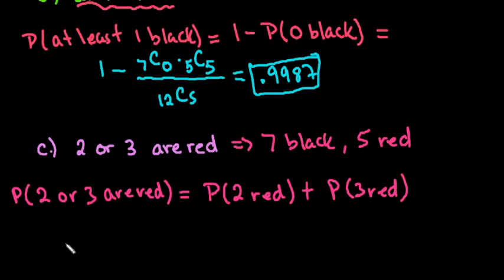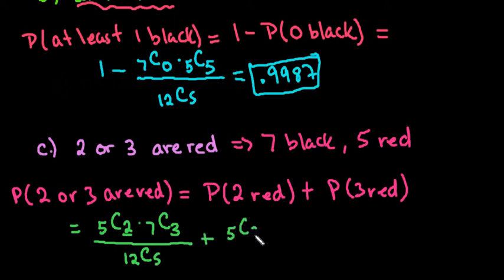So this time, because we're looking for red, I'm going to put that one first. Since we have 5 red, it would be 5 things taken 2 at a time. And the other one, because we have black, we have 7. Remember that this has to add up to be 5 because we're taking a total of 5. So I would do 12C5. And then I would have to add, I want 5 things taken 3 at a time, which means that I would have 7C2 over 12C5.